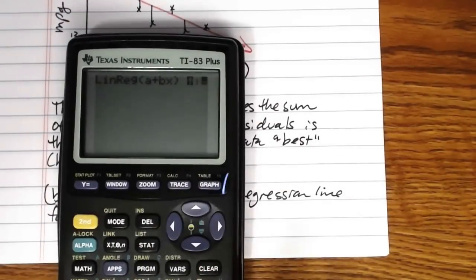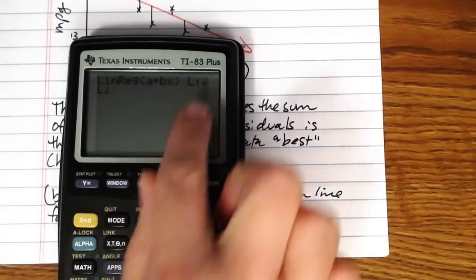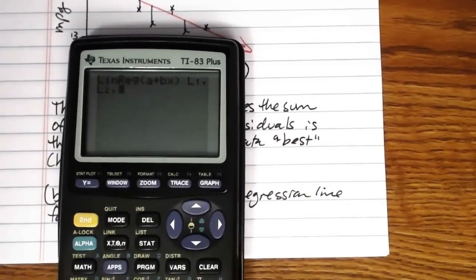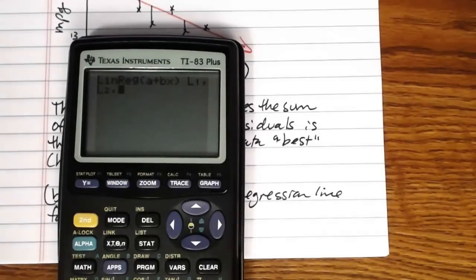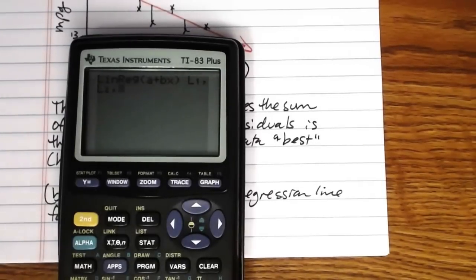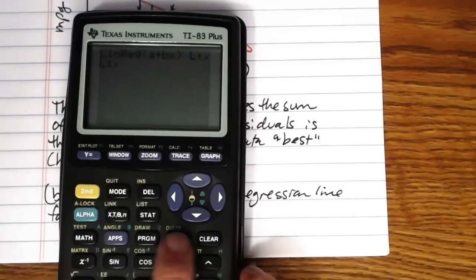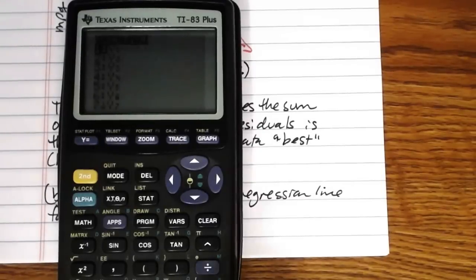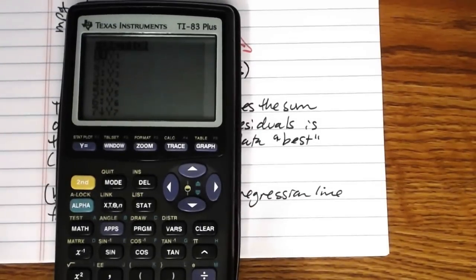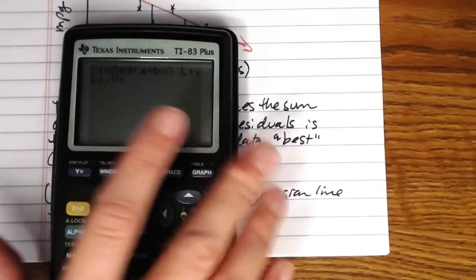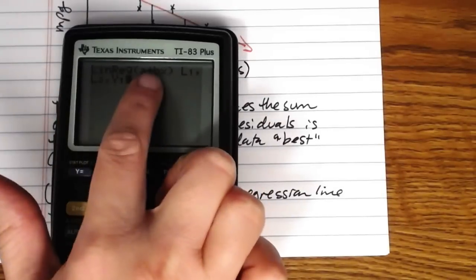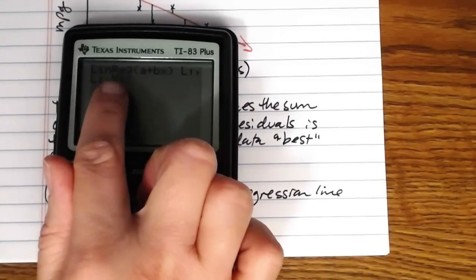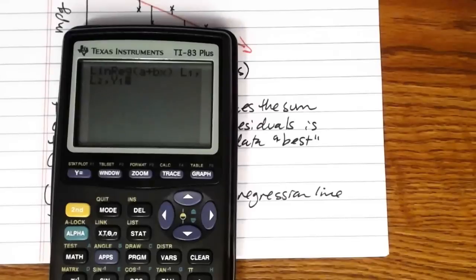So here's how we would do that. We still want L1 comma L2 since that's where our data are stored, x comma y. And then we want one more comma, and what we're going to put in now is the place where we would like the calculator to store the line of best fit. So we've got list one, list two, comma, and then press VARS, V-A-R-S right here next to clear, scroll right one to Y-VARS, press enter to select function, and press enter to select Y1. So what this command will do is it will find the line of best fit for the x data in list one, the y data in list two, and it will store the equation of that line in your Y1 under your y equals so that it will graph along with the rest of the data.